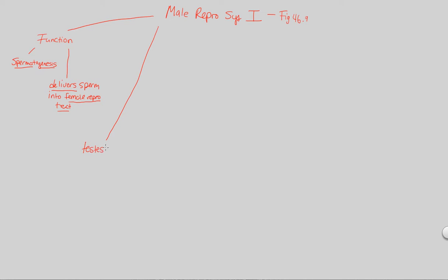Let's label this as testes — that's the plural; the singular would be testis. You may also have heard of testicle, which we'll get to later. Testes essentially are the male gonads — the male structures that are going to be producing sperm. They consist of two substructures that are important to understand, labeled in figure 46.9: the seminiferous tubules and also the Leydig cells, which are intertwined within this structure.